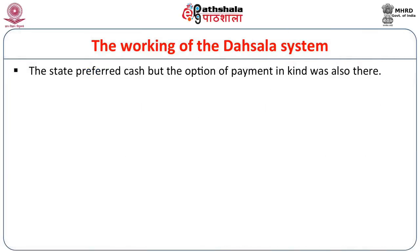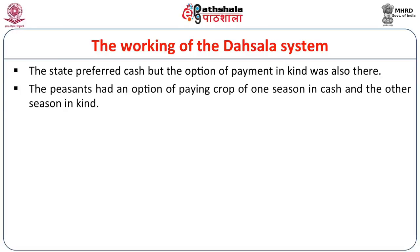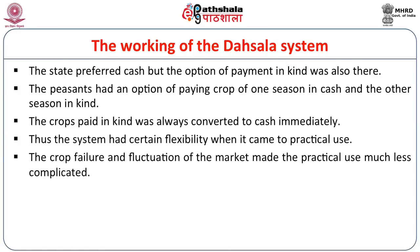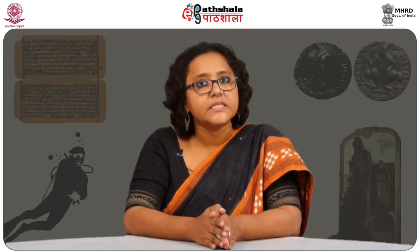Although the state preferred cash, the option of payment in kind was also there in certain parts of the empire. The peasants had no option of paying one season in cash and the second season in kind. The crops paid in kind were always converted to cash immediately as per the local rate, as contemporary documents testify. Thus the system had certain flexibility in practical use, which would keep the peasants content; otherwise, peasant uprisings would have become very frequent in certain parts of the country.